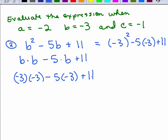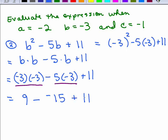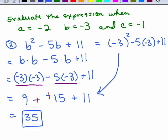We're replacing B with negative 3 and now doing order of operations — multiplication first. There are two places with multiplication. Negative 3 times negative 3 is 9, minus, and then 5 times negative 3 is negative 15. Minus negative 15 is the same as plus positive 15. Then we add the three numbers: 9 plus 15 plus 11. Adding 9 and 11 first gives 20, plus 15 equals 35.